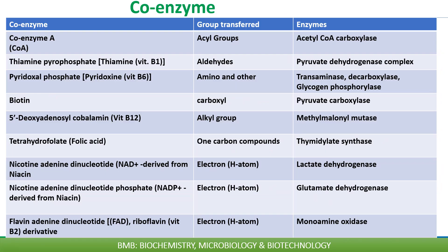This table shows different coenzymes, their associated enzymes, and which groups they transfer during enzymatic reactions. Coenzyme A (CoA) is required by acetyl-CoA carboxylase for acyl group transfer. Thiamine pyrophosphate — that is thiamine or vitamin B1 — transfers aldehyde groups via the pyruvate dehydrogenase complex.